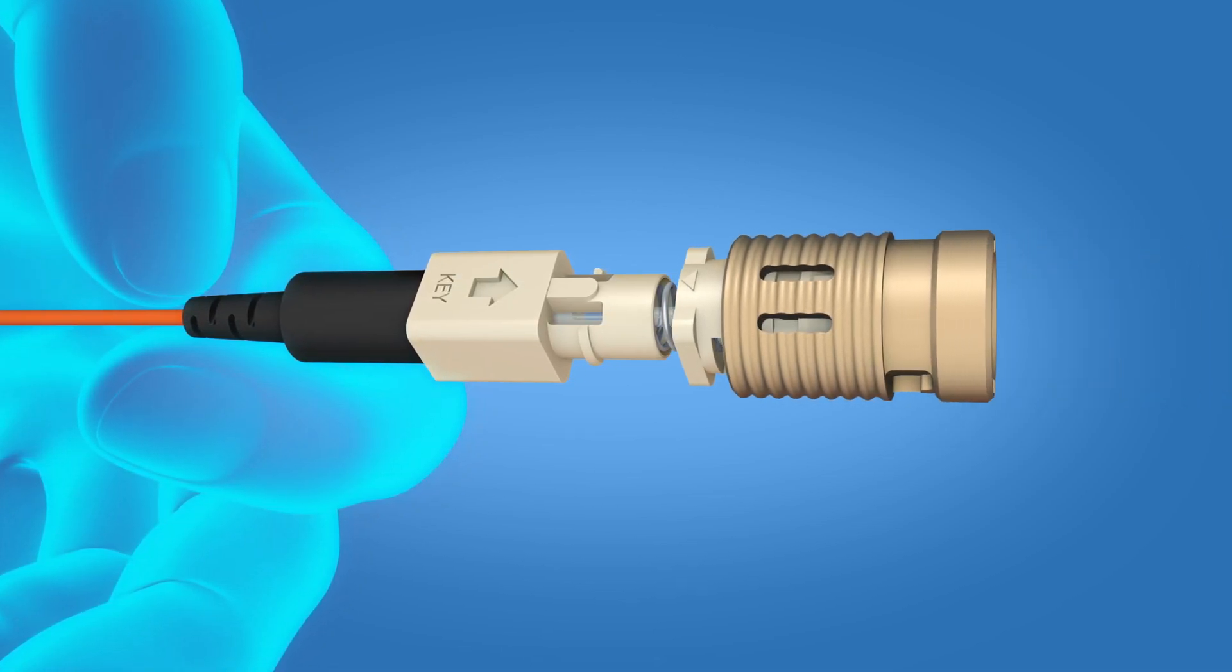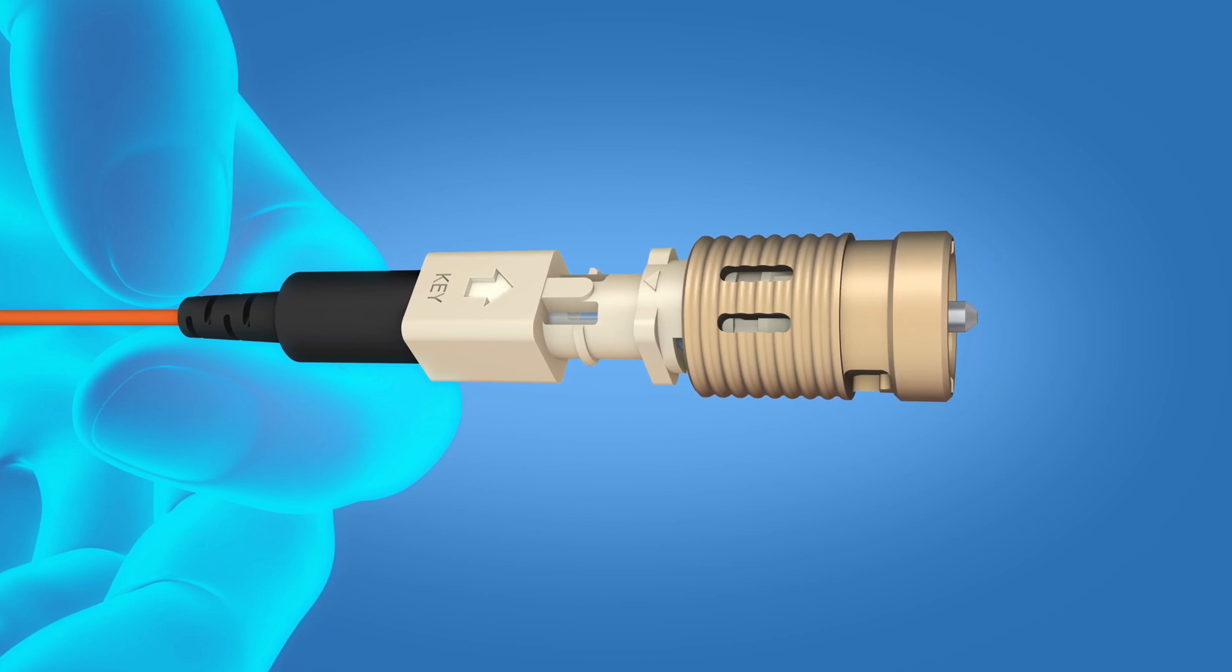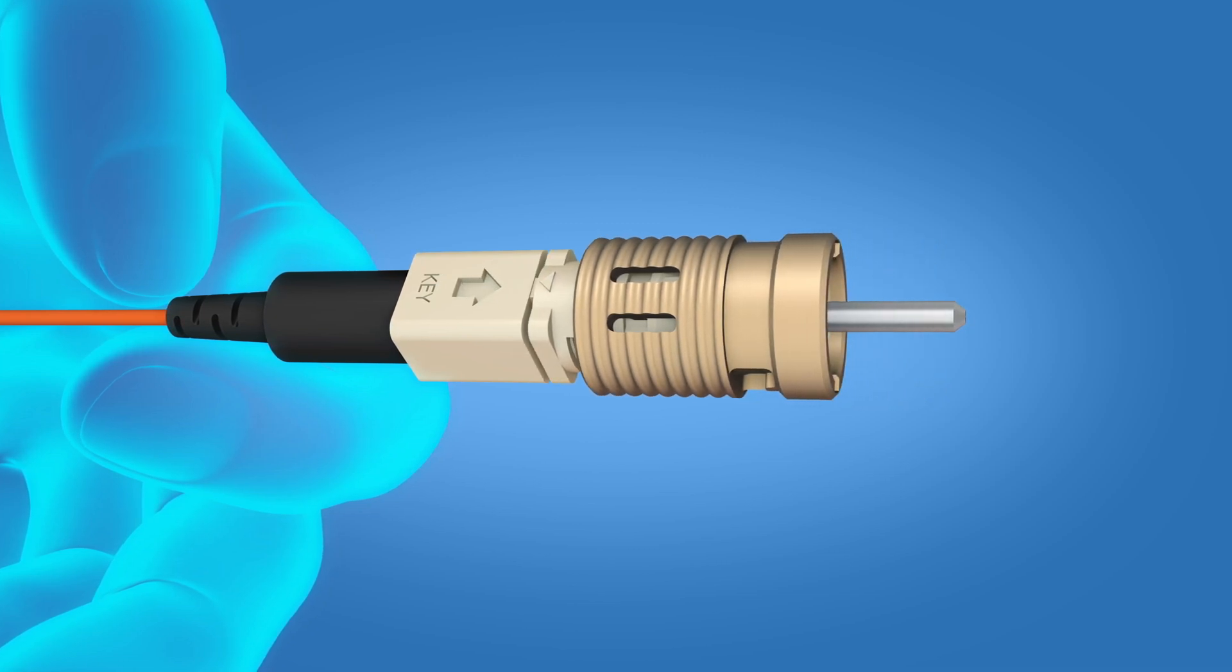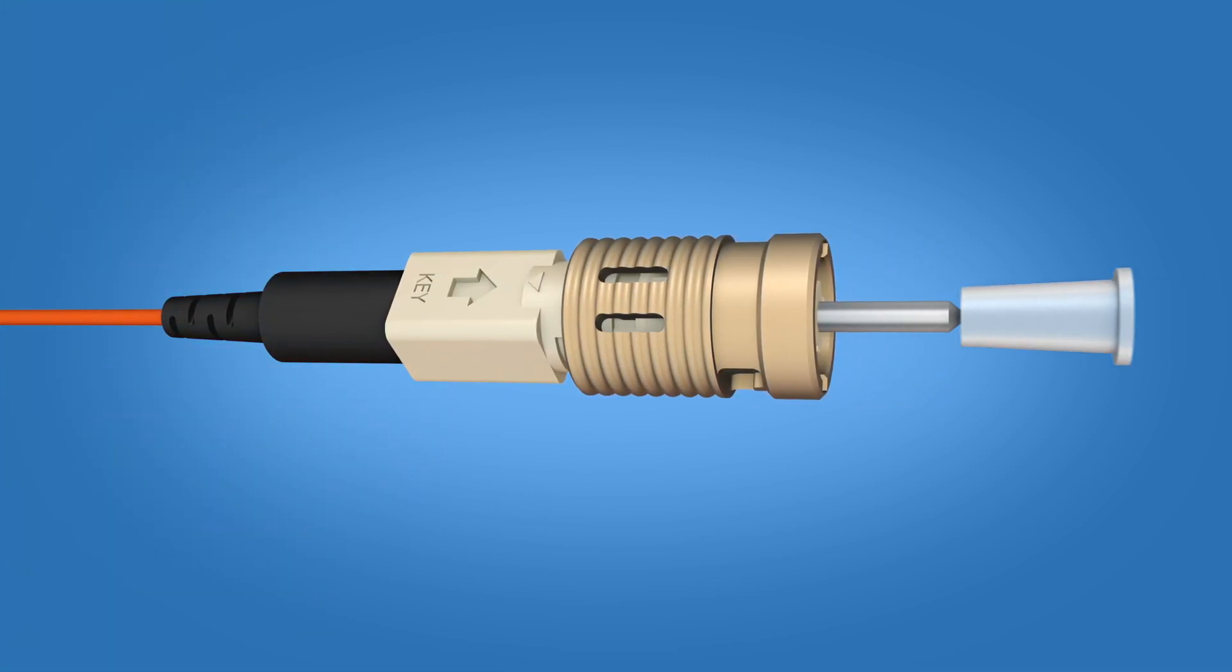Slide the connector housing onto the boot unit. The key on the boot and the arrow on the housing should align. Push until a click is heard. Apply the dust cap. The termination is now complete.